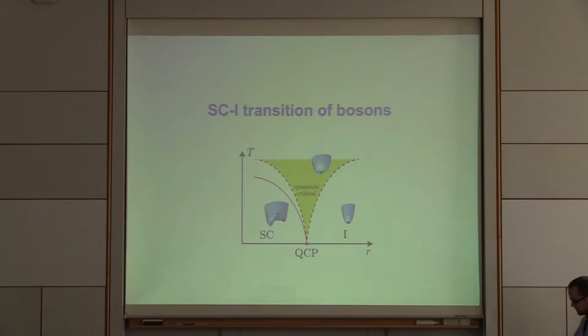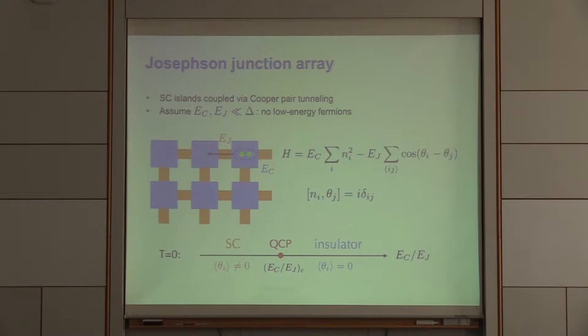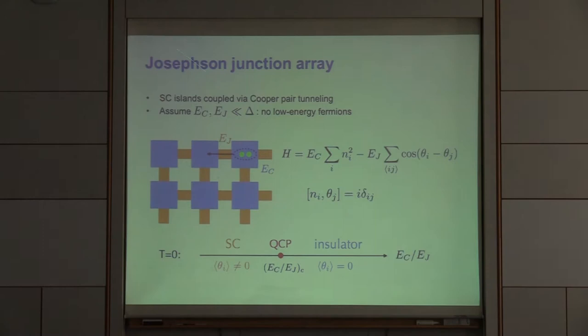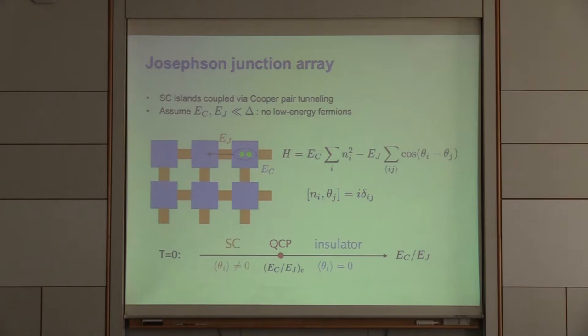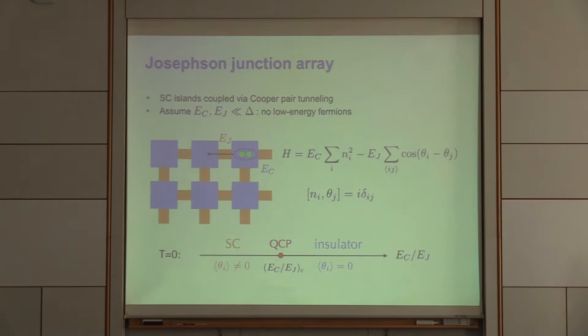Let's start with the superconductor-insulator transition of bosons. The classic setting to observe this transition is the Josephson Junction Array — a two-dimensional array of superconducting islands coupled via Cooper pair tunneling. The Hamiltonian contains two terms: a charging energy that pins the number of Cooper pairs on each island, and a Josephson energy that favors tunneling between neighboring islands, establishing phase coherence. The number and the phase are conjugate variables, so these two terms compete.